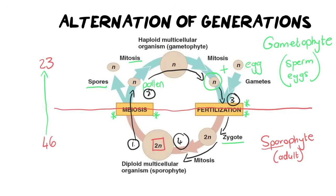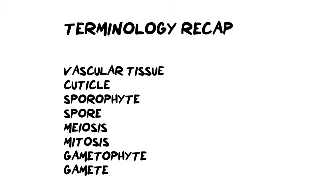Every single plant group will have its very own life cycle based on this alternation of generations but with modifications, because every one has different bodily structures that either improve or assist its reproductive success. You can use the transcript from my videos — upload it into something like ChatGPT — to make flashcard questions that are scientifically correct, which saves you a lot of time.